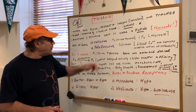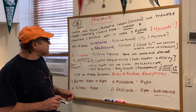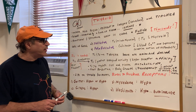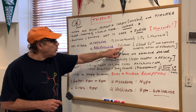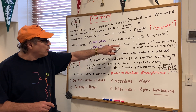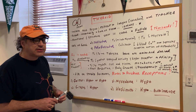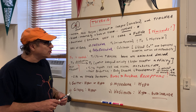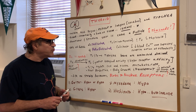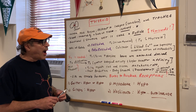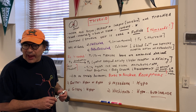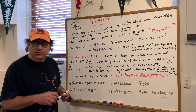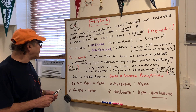The parafollicular cells are involved in making calcitonin, which decreases calcium in the blood and suppresses the resorption activity of osteoclasts. Remember, the osteoclast breaks down bone.